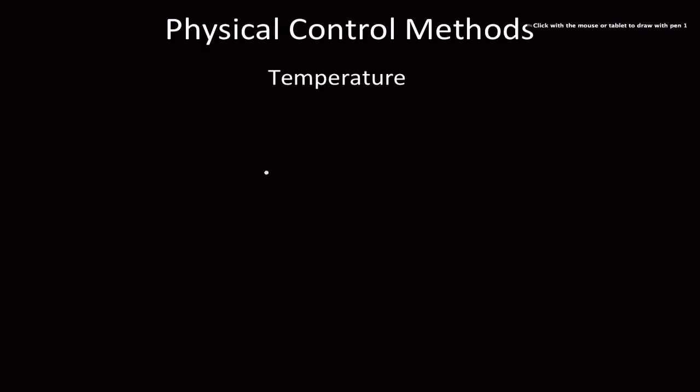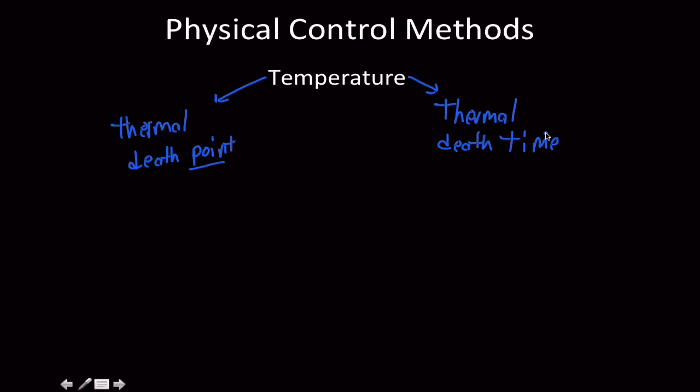Let's talk about physical control methods. First thing we'll talk about is temperature. And there's two terms that we need to know when we're talking about temperature in the context of microbiology. There's the thermal death point and then there's the thermal death time. And we'll explain these terms here.